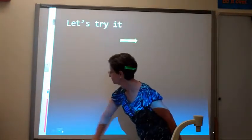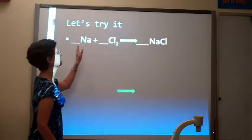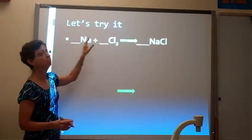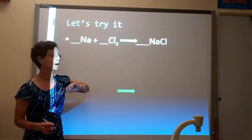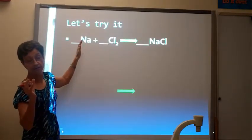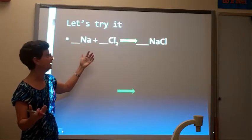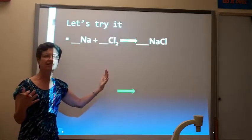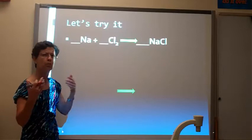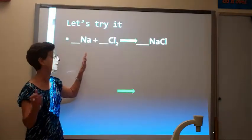Alright, so we're going to try it. We're going to start out with this simple equation: Na plus Cl₂ yields NaCl — sodium plus chlorine gas produces sodium chloride. Sometimes you will have a little letter to indicate whether it's a solid, liquid, or gas, but I didn't include it here. So we have one sodium on the reactant side and one sodium on the product side — those are okay.